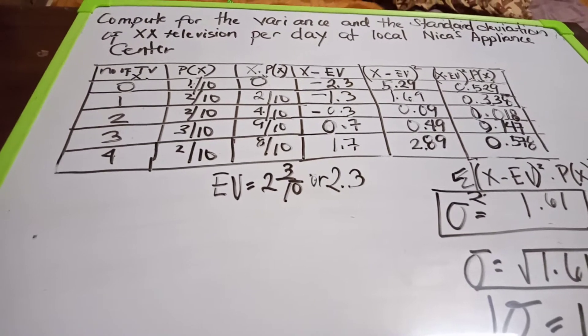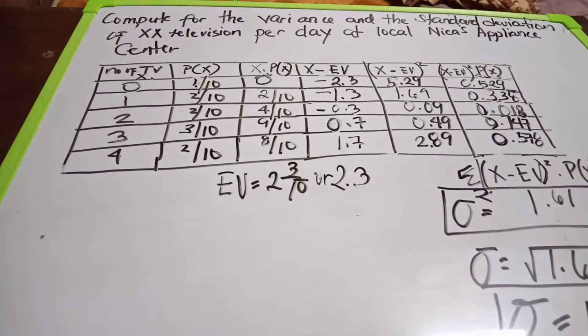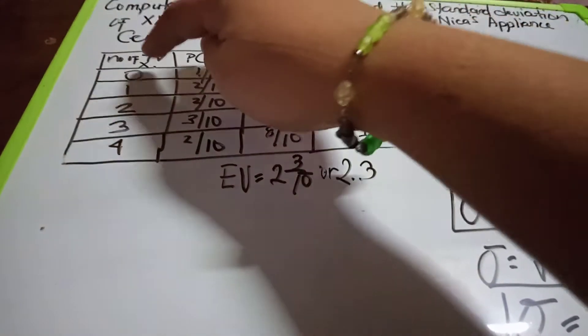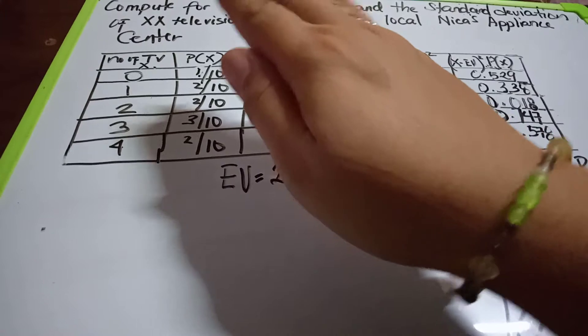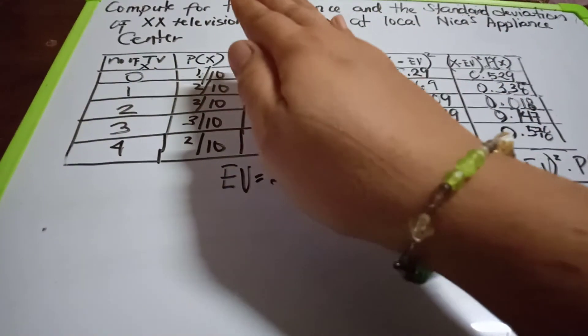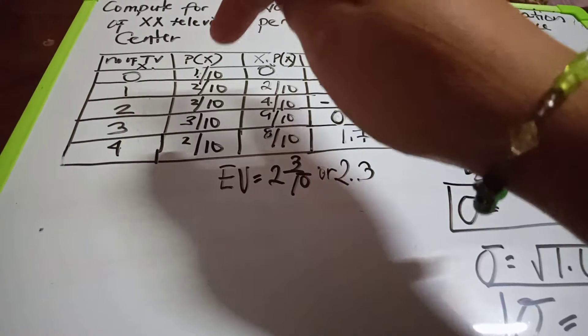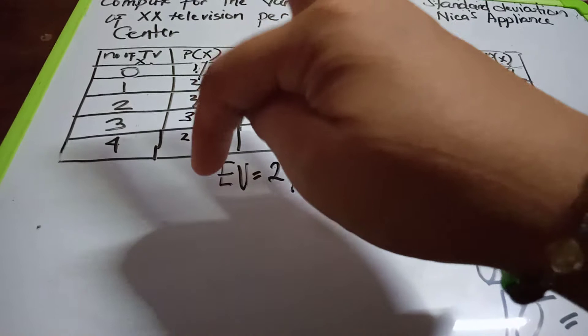Let x represent the number of TVs: zero, one, two, three, four. This is the given data. The probabilities are one over ten, two over ten, two over ten, three over ten, and two over ten, with a total of one.